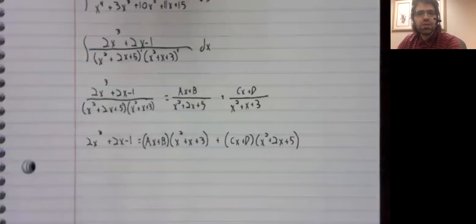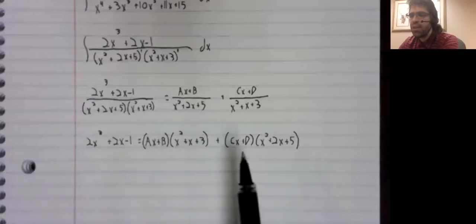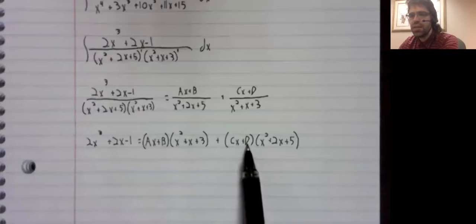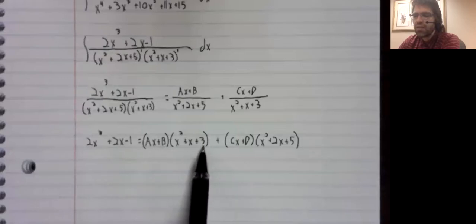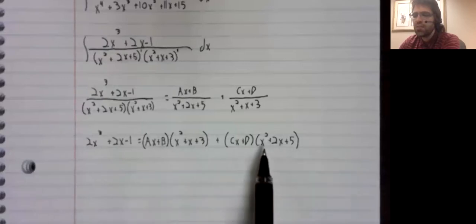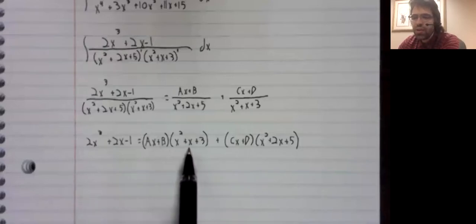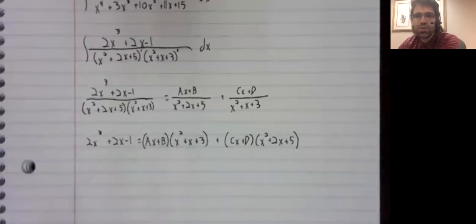But now our problems compound. We can't use the Heaviside method to easily find A, B, C, and D. The Heaviside method was to select values of x that make these equal to zero. But there are no values of x that make these equal to zero, or at least no real values of x. They are irreducible quadratics.